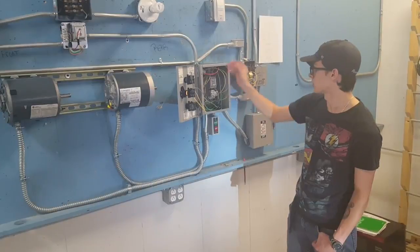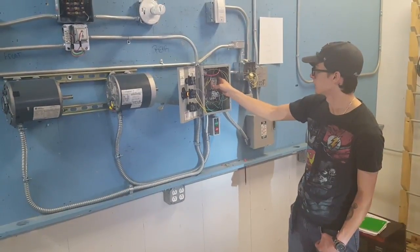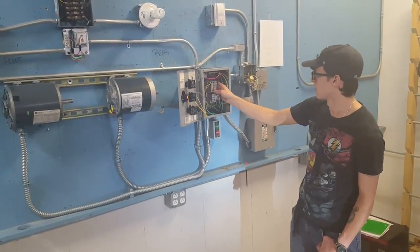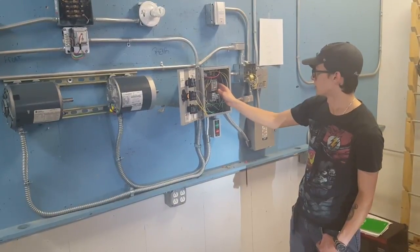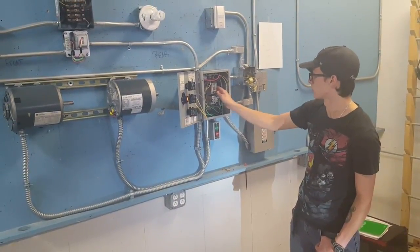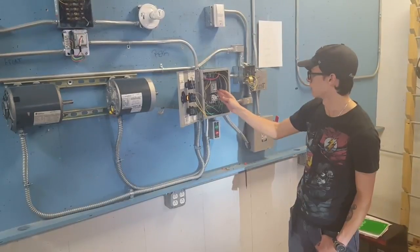When the button is pushed, it energizes the coil in the contactor. And when the coil is energized, it will turn on the electromagnet, which will connect the line side to the load side.